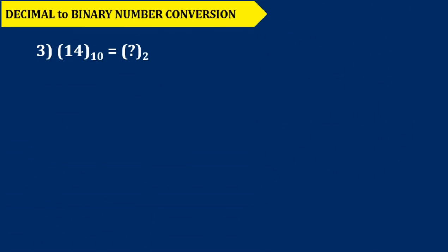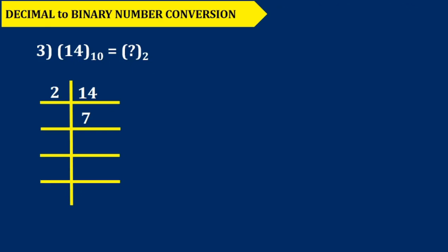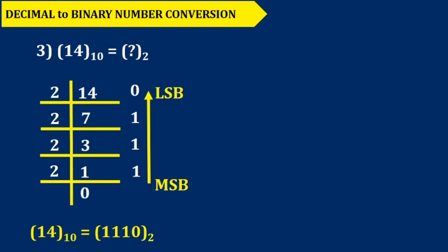Let's have a look at another problem. Here we have to convert 14 into its corresponding binary number. 2 times 7 is 14, remainder is 0. 2 times 3 is 6, remainder is 1. 2 times 1 is 2, remainder is 1. 2 times 0 is 0, remainder is 1. We collect it from downward to upward and get 1110. That is the binary corresponding number of decimal number 14.